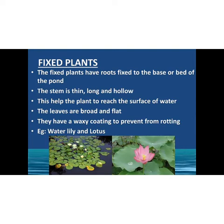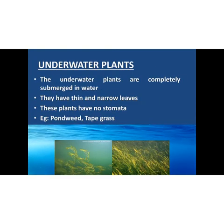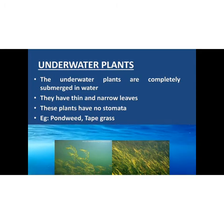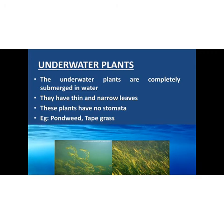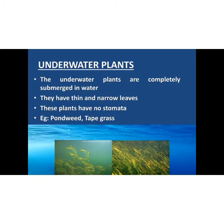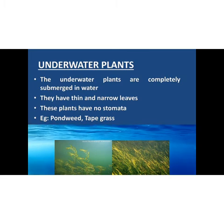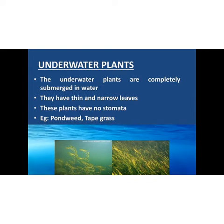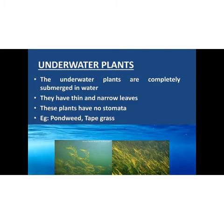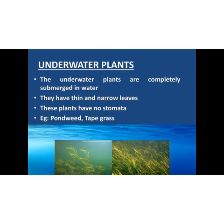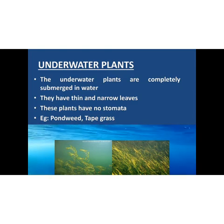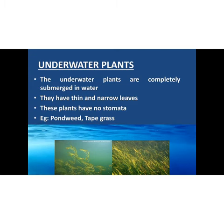Now let's study about underwater plants. There are some plants which are completely submerged in water; they are called underwater plants. They have thin and narrow leaves and also they have no stomata. As they have no stomata, the plants take in air directly through the body. Examples of underwater plants are tapegrass and pondweed.